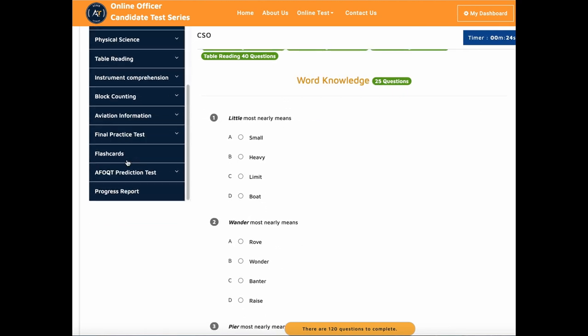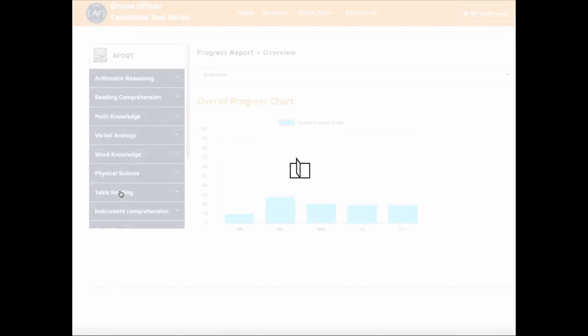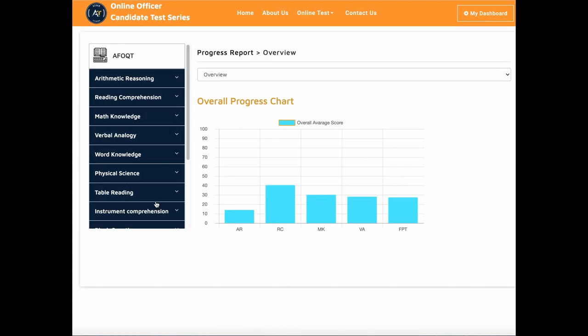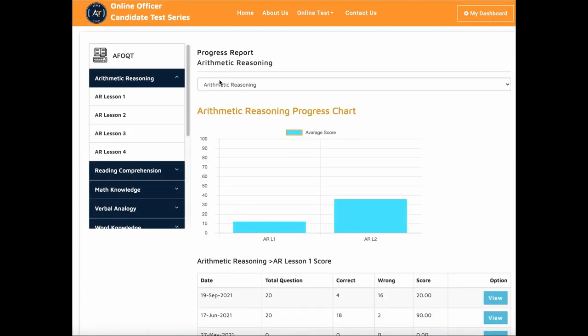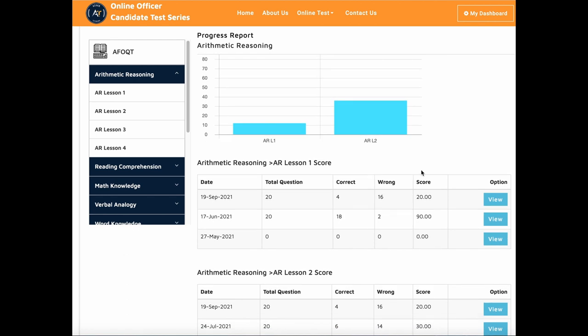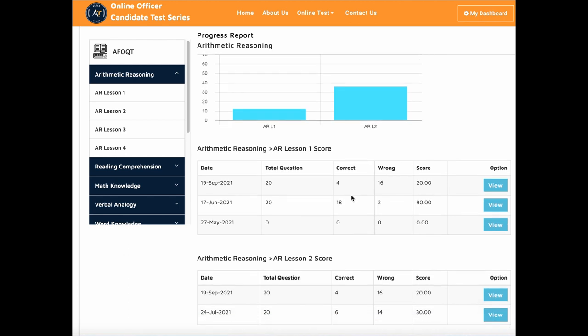So the last thing we have is your progress report, right? So as you could see here, this is my progress report. I took the test and you could see my progress in each area, right? This is kind of overview and you could also go in individual areas. So say my arithmetic reasoning progress. So you could say, I took the test many times and you see my score...